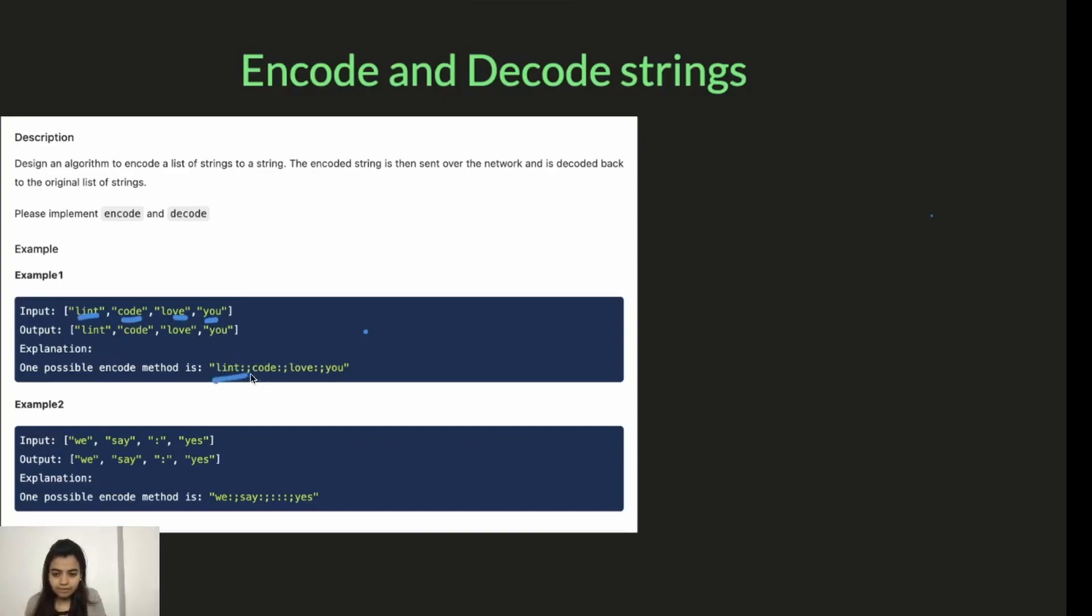Something like this: lint code love you. In this, they have joined each word by using colon and semicolon. And then the output in decode will be the input will be this string, and the output will be each of the words again. So input and output are same.